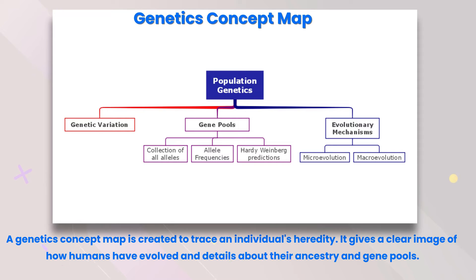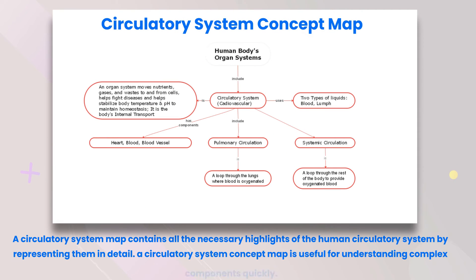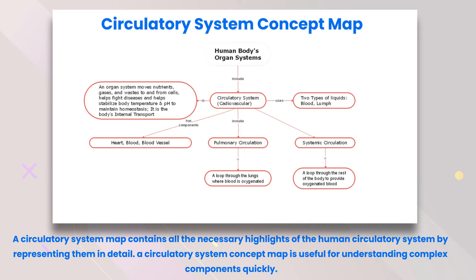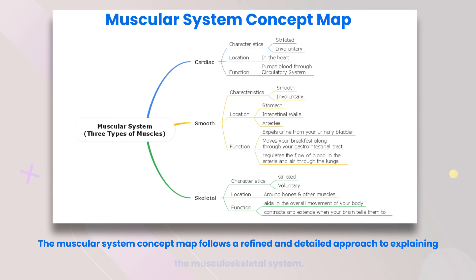The genetics concept map gives a clear image of how humans have evolved, with details about their ancestry and gene pools. Circulatory system concept map: a circulatory system concept map contains all the necessary highlights of the human circulatory system, representing them in detail and helping with understanding complex components quickly. Muscular system concept map: the muscular system concept map follows a refined and detailed approach to explaining the musculoskeletal system.